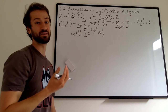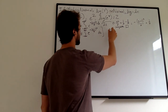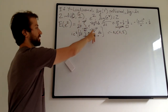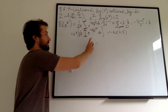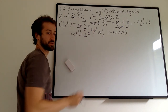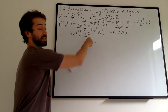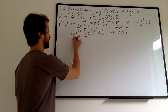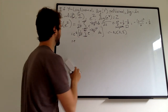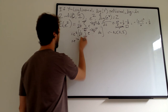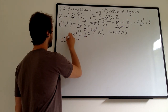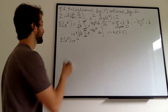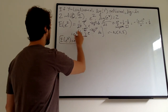This integral still looks tough, but if you look at this term, it looks like the density of a random variable we know — specifically it looks like the density of a Normal(1, 1), because we have z minus 1 in the numerator (that's the mean), and the denominator is 2 times sigma squared equals 1. So this is the density of a Normal(1, 1), and integrated over the support from negative infinity to infinity, that just becomes 1. So we get E[e^z] = e to the one half, a.k.a. the square root of e.